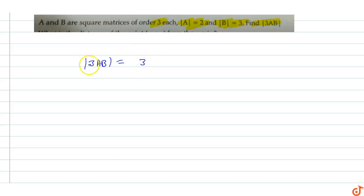3 raised to power n times |A| times |B|, where n is the order of the matrices. Since we have square matrices of order 3, n equals 3.